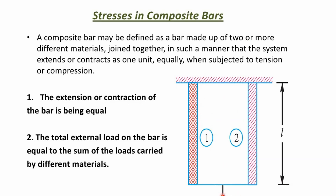Whenever this assembly is subjected to a force, the extension or contraction of the bar is equal for both materials. The total external load on the bar is equal to the sum of the loads carried by the different materials — the total load is shared by the inner bar and the outer bar. We use two relations: first, the extension or contraction of both bars is equal; second, the total external load equals the sum of the loads carried by each material.